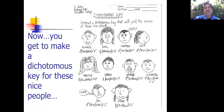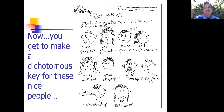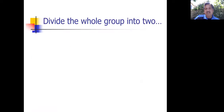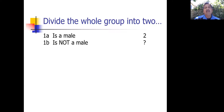You are going to make a dichotomous key for these people. As you look at these 10 people, the first thing you notice is that there are some males and some females. I'm going to use that as my first characteristic and divide the whole group into two. The two groups are male, and — carefully now — you could say 'is a female,' but let's say 'is not a male,' because if we get into the habit of doing this, making our dichotomous key will be so much more simple. You can only have one statement that is true: either this person is a male, or this person is not a male.